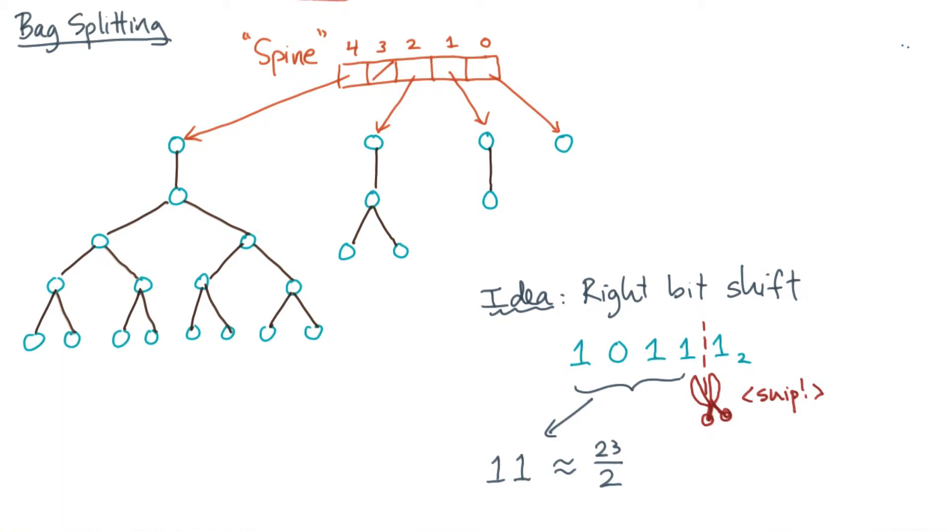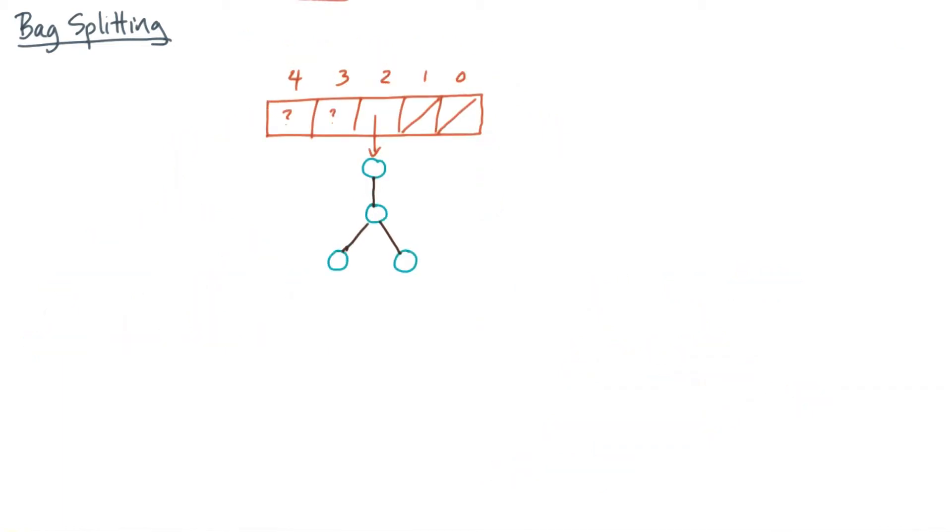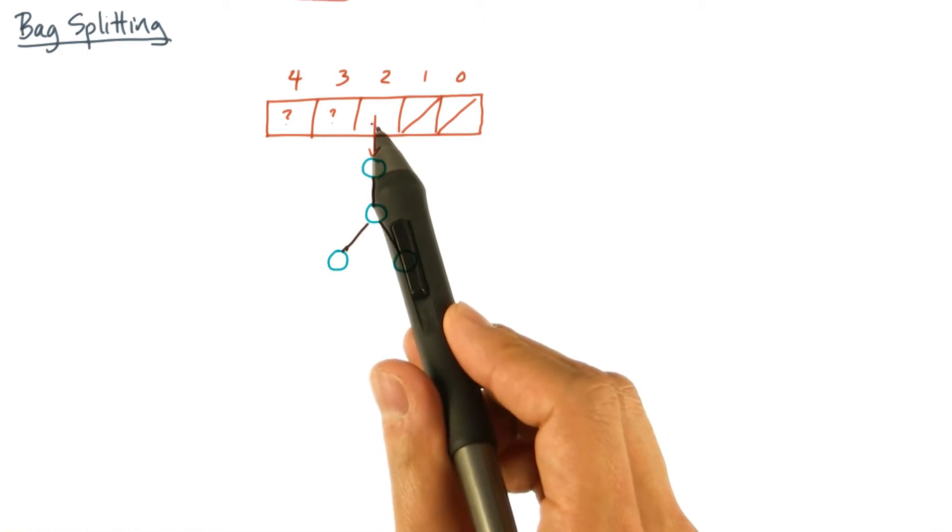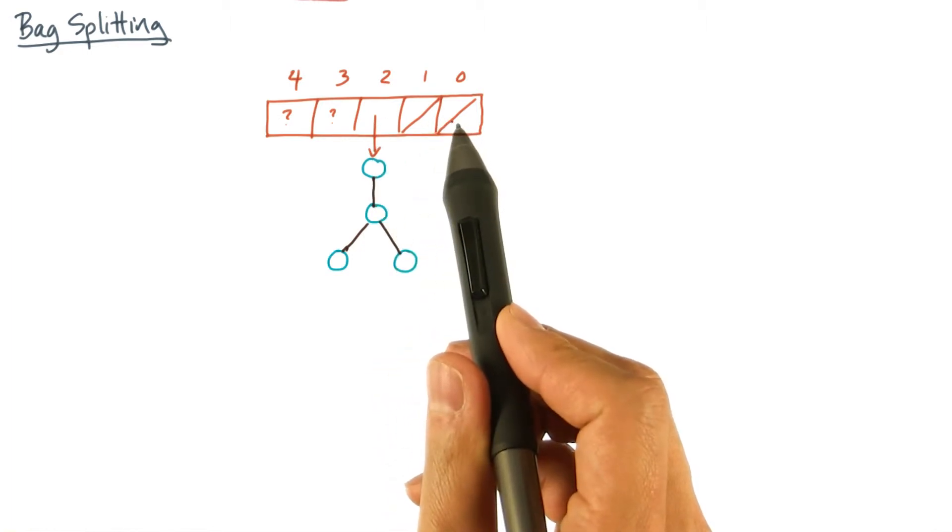But how do we actually apply this idea to bag splitting? Let's see how this works on a simpler example. Here's a bag whose smallest pennant is of size four. In other words, the two slot is full, and the one and zero slots are empty.